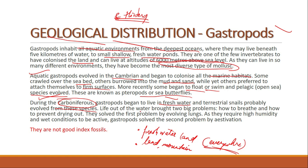Life out of the water brought two big problems: how to breathe and how to prevent drying out. They solved the first problem by evolving lungs. As they require high humidity and wet conditions to be active, gastropods solved the second problem by estivation. So they can be found everywhere — in the deepest oceans, shallow water, and high altitudes — which is why they are the most diverse type of mollusc.